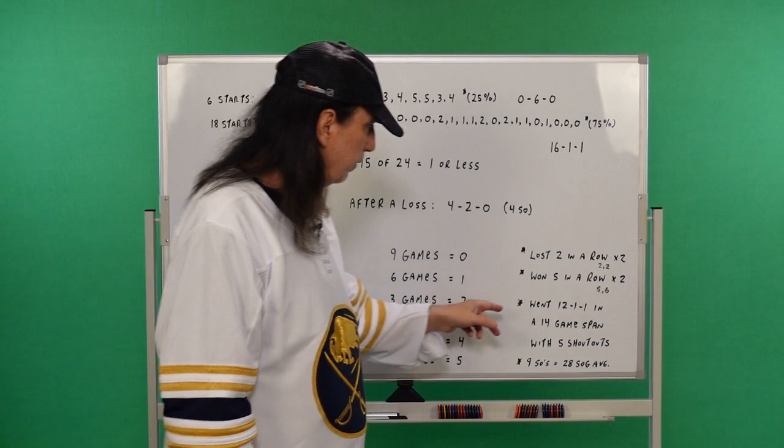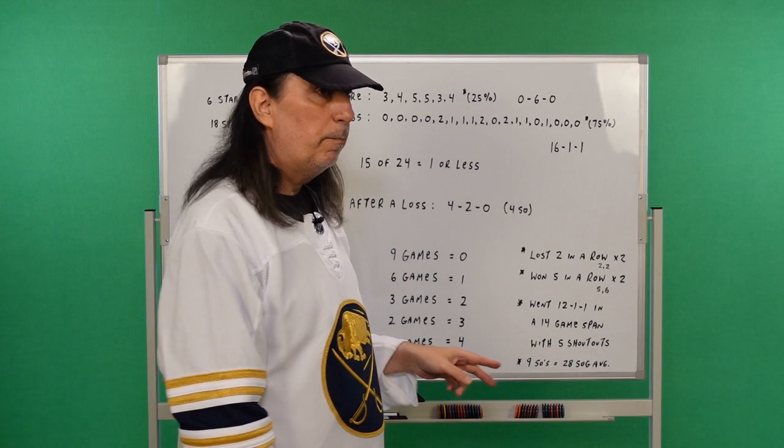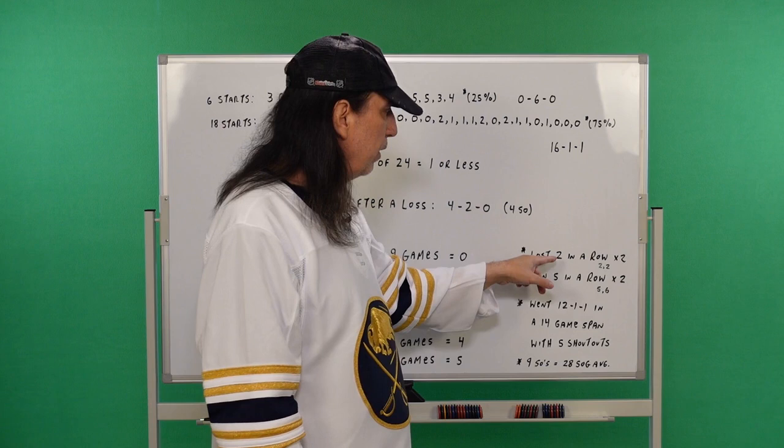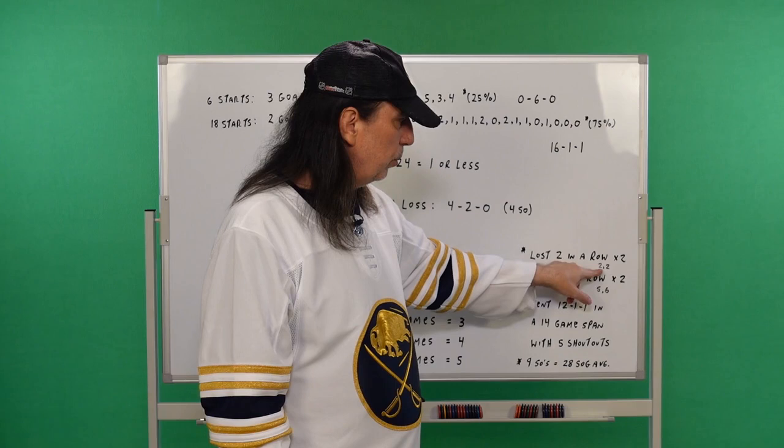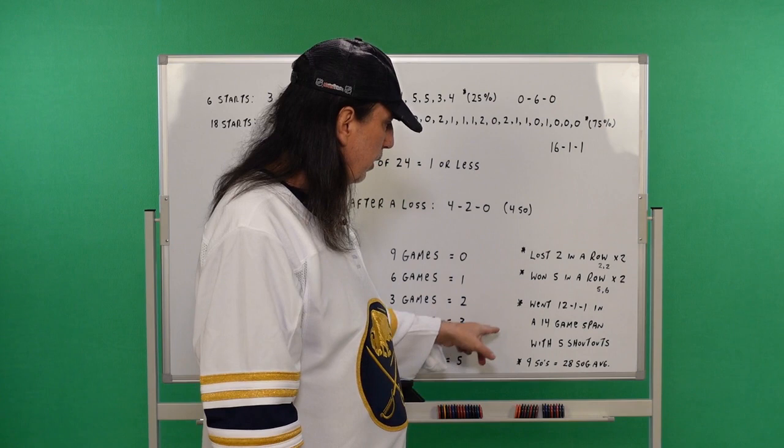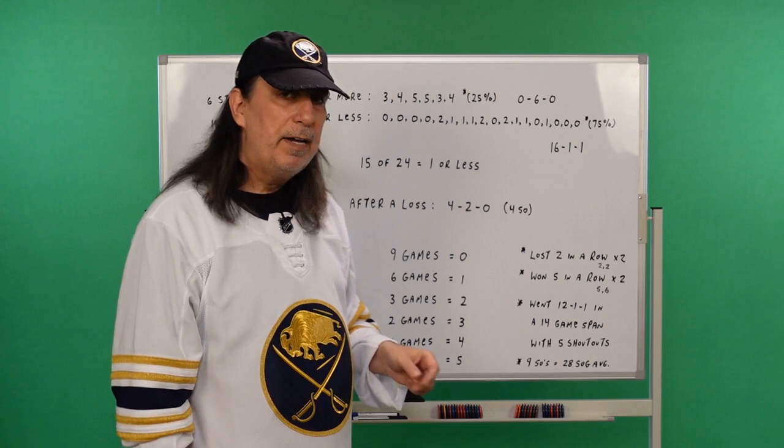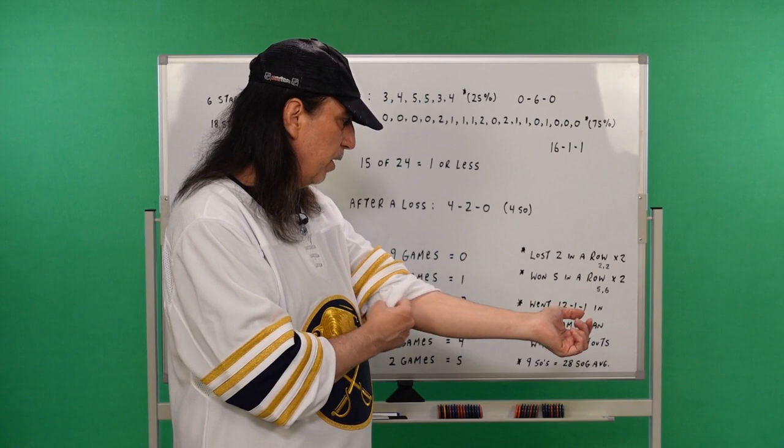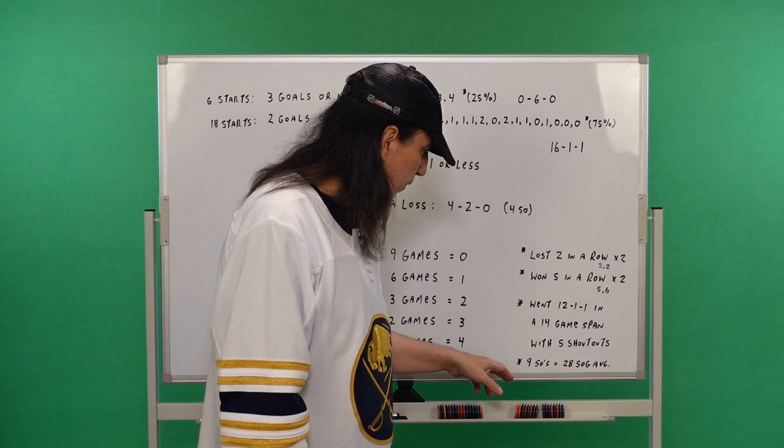He lost two in a row, twice all year. And that's him not bouncing back after a loss. In those two, two game losing streaks, two and two. He's won five in a row, twice this year, a five game winning streak, and then a six game winning streak. He went 12-1-1 in a 14 game span with five shutouts. In 14 games, he had five shutouts, and he went 12-1-1. And that was after the season, the hot start. He did it again. It's just crazy.